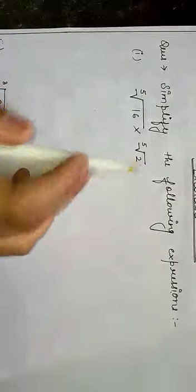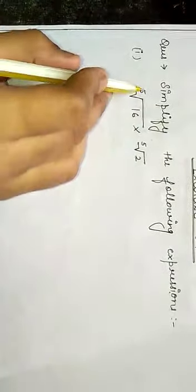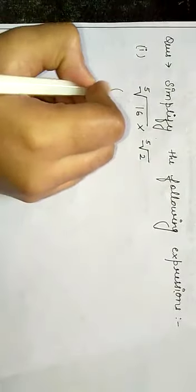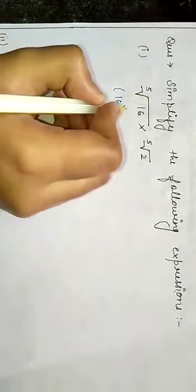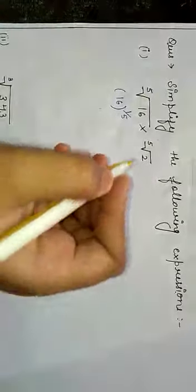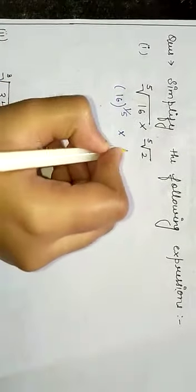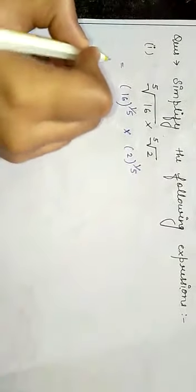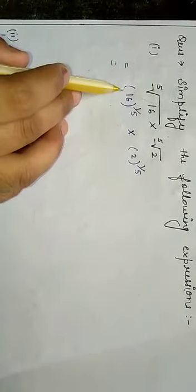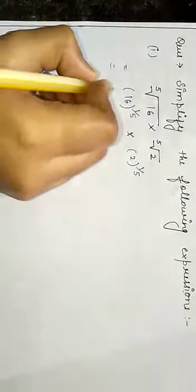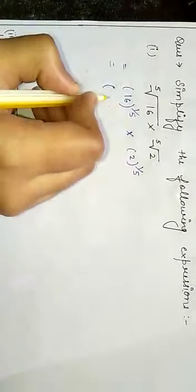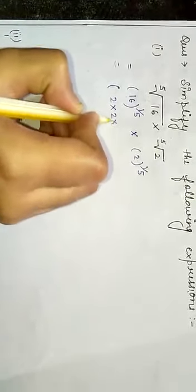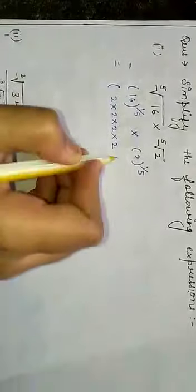The first step to solve these expressions: first of all I can write root 16 to the power 5 as 16 to the power 1/5 times 2 to the power 1/5. Then the next step is taking a factor of 16, which is 2 × 2 × 2 × 2, four times.